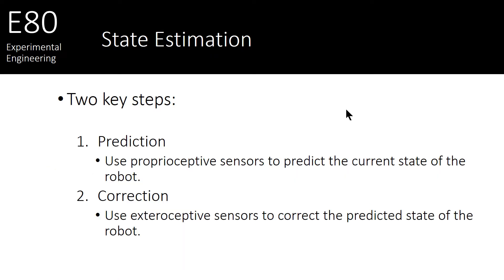In general, state estimation can be described with two key steps, a prediction step and a correction step. You'll see different variants of this out in the state estimation world, and you should understand that state estimation is its own field in engineering. There are many different researchers around the world, probably thousands, working on new state estimators all the time. But most of them will involve these two key steps, prediction and correction.